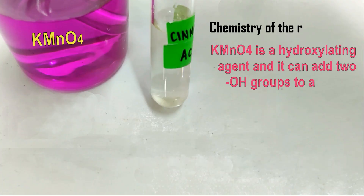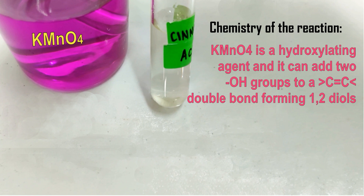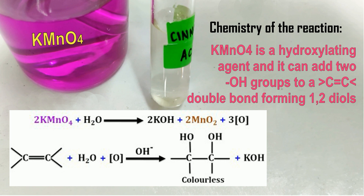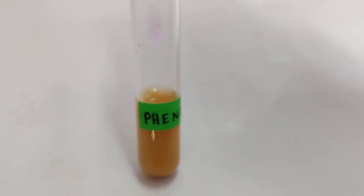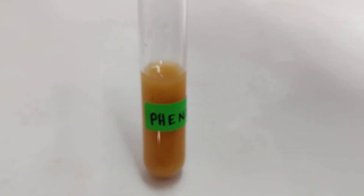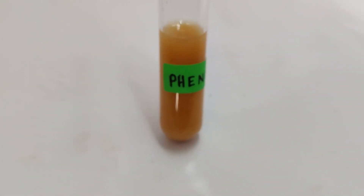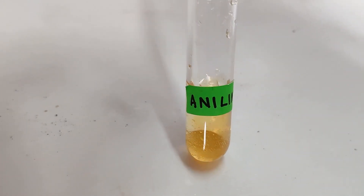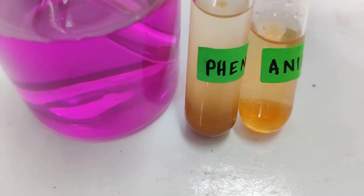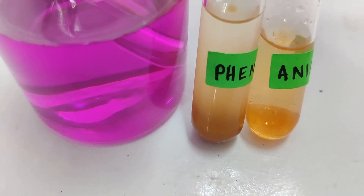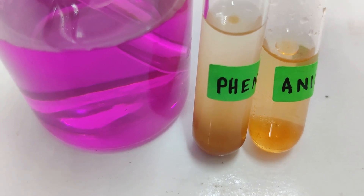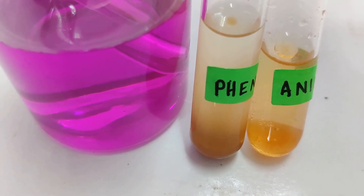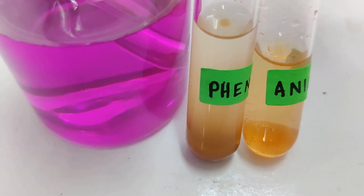KMnO₄ is a hydroxylating agent and it can add two OH groups to a carbon-carbon double bond, forming 1,2-diols. Easily oxidizable compounds such as phenol, aniline, etc. also decolorize the permanganate solution. Being an oxidizing agent, KMnO₄ oxidizes easily oxidizable compounds like phenol and aniline, which is indicated by decolorization.